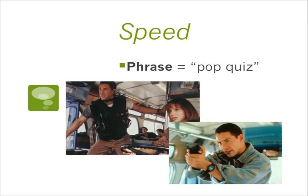Motifs can also come in the form of phrases or things people say. One example comes from the movie Speed, where throughout the first half of the movie different characters repeatedly use the phrase 'pop quiz' in tense moments involving bombs and explosions. We'd have to pay attention — the bad guy said it the first time, somebody else said it again, and then it was used as a clue to deduce who the bad guy actually was later on. The point is: motifs don't always have to be visual — in this case they are auditory.